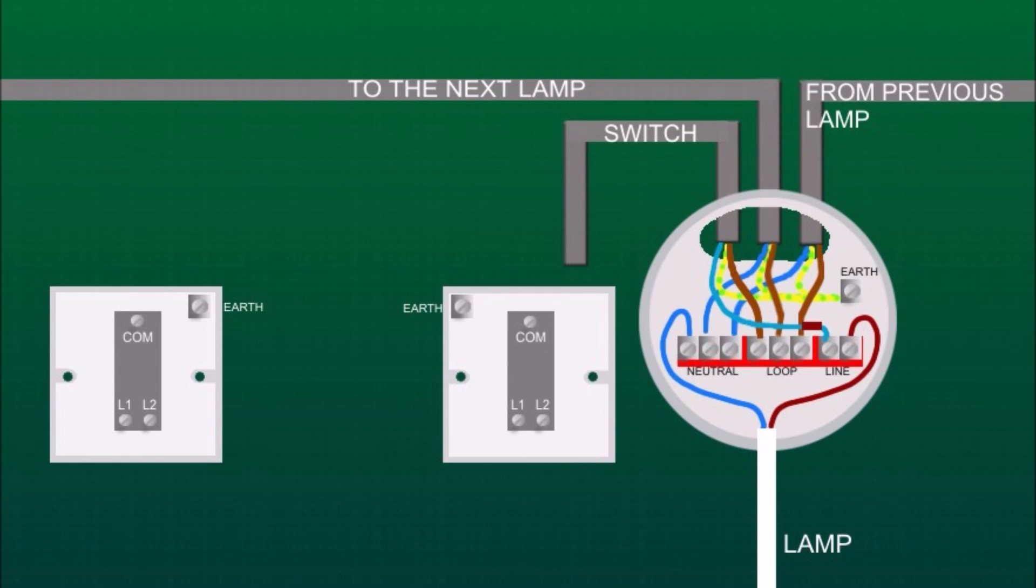And we need to put a brown sleeve on it as when we switch the lights on, this wire becomes live as well. At the first switch, the earth wire goes to the earth terminal that is usually located inside the back box, not on the switch like on this picture, so you need to find it and wire it there.